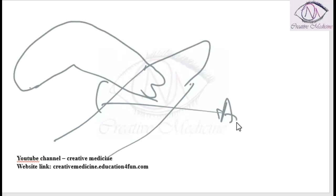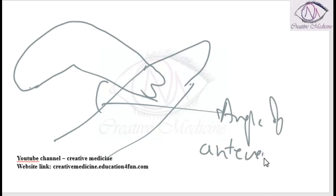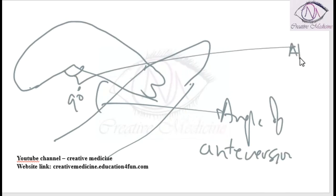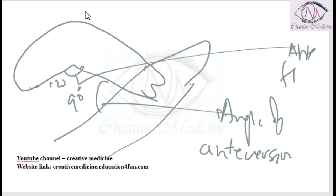This is the angle of anteversion, which is 90 degrees. This is the angle of anteflexion, which is 120 degrees. The angle of anteversion is between the cervix and the vagina; the angle of anteflexion is between the cervix and the uterus. Retroversion is the first step in prolapse.